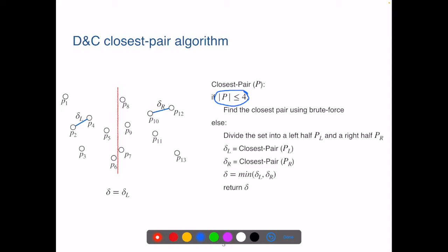So delta will be the minimum between delta L and delta R. So for this case, that'll be delta L and we return delta.